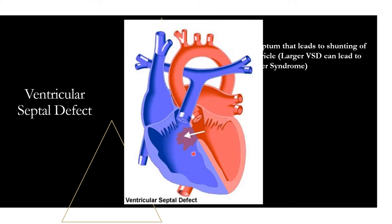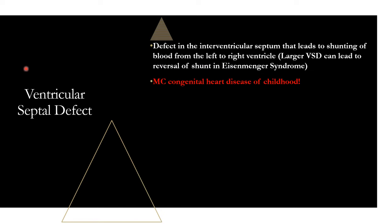VSD is your most common congenital heart disease of childhood — this is something you will definitely be asked on your boards or exams. You have the ventricles, the septum, and just a hole here with the left side shunting over to the right and moving to the right ventricle. What is the most common congenital heart disease of childhood? VSD — ventricular septal defect.